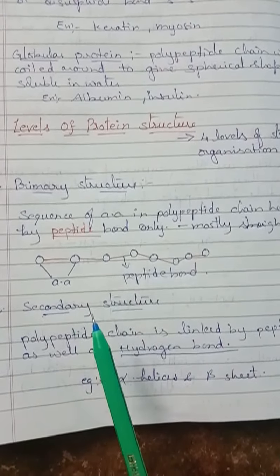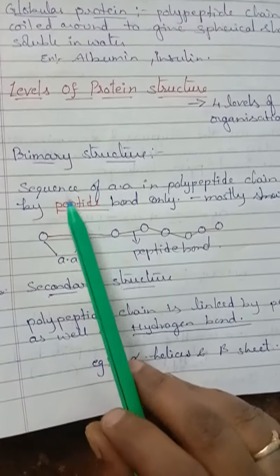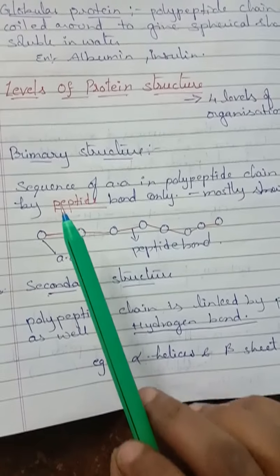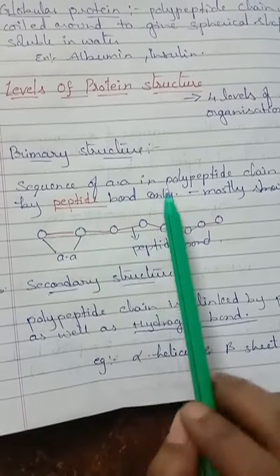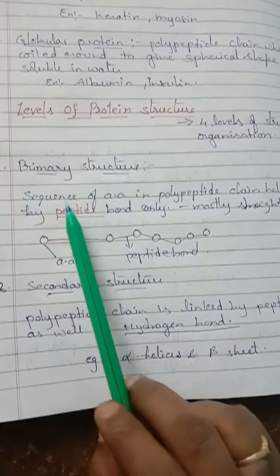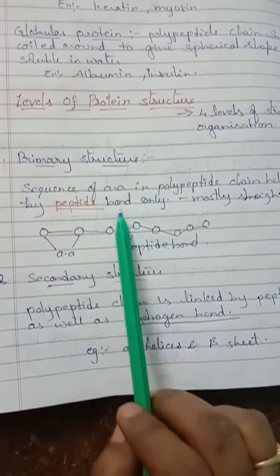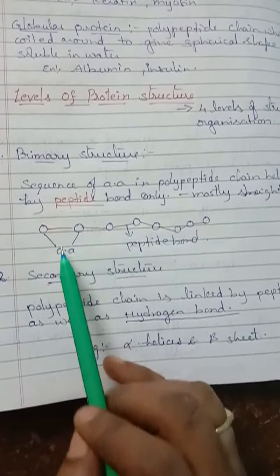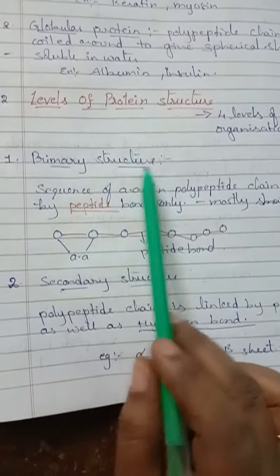The four levels are: primary structure, secondary structure, tertiary structure, and quaternary structure. The primary structure of a protein — each protein has one or more polypeptide chains, and each polypeptide chain has amino acids linked together in a specific sequence. The sequence of amino acids in a polypeptide chain is held together by peptide bonds only. Here you can see different types of amino acids joined together with the help of a peptide bond.